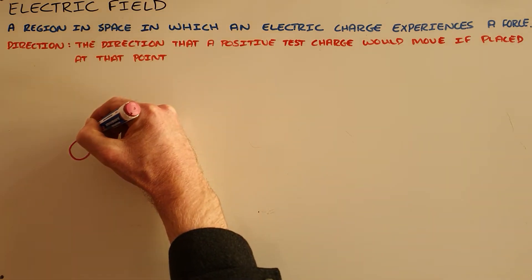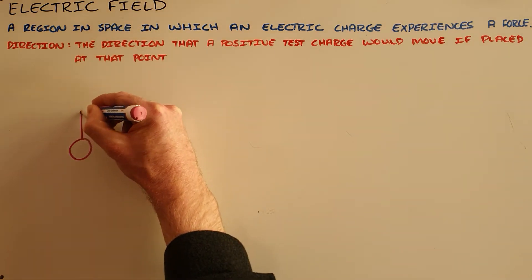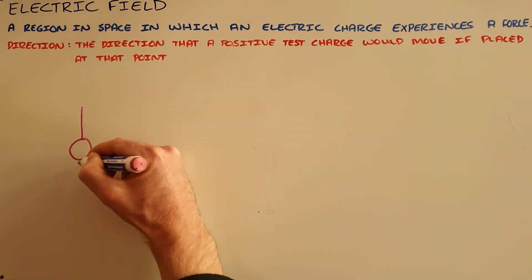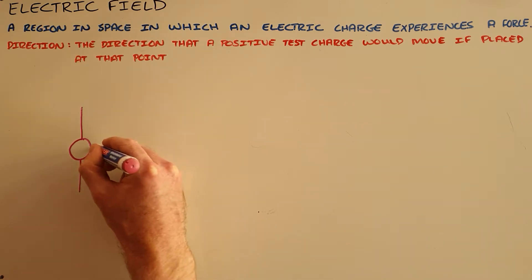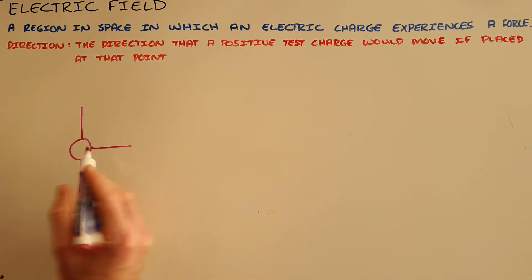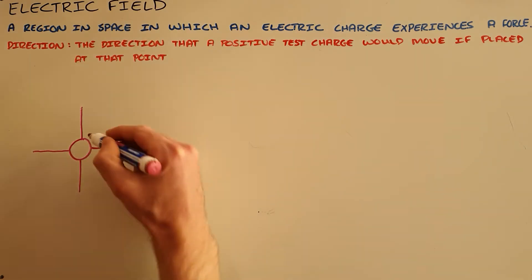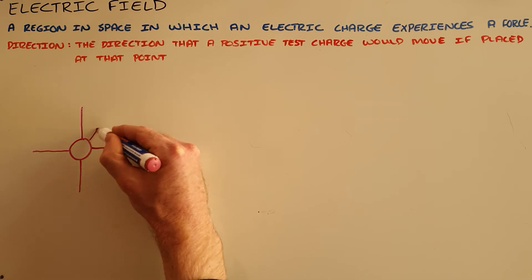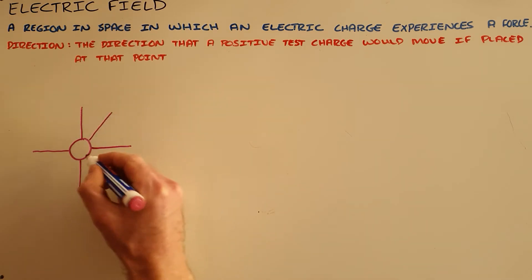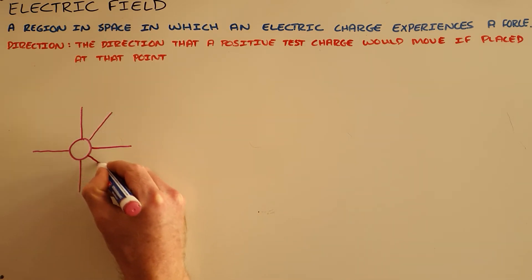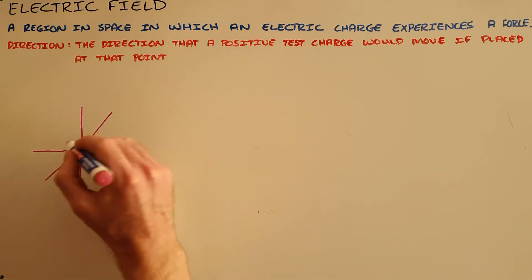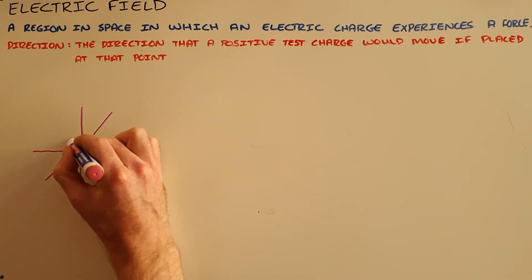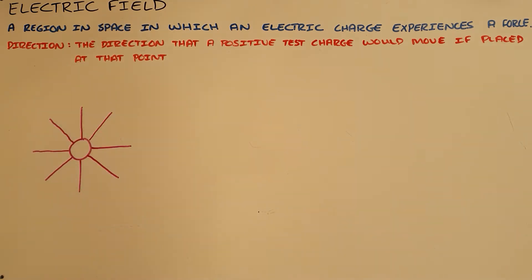We show that region with the use of field lines. Field lines give us an indication of field strength around a charged object or in an area. Where field lines are closer together, they represent a stronger electric field, and as they get further apart, the electric field gets weaker.